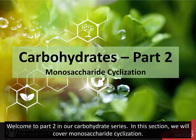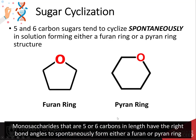Welcome to part two in our carbohydrate series. In this section we will cover monosaccharide cyclization. Monosaccharides that are five or six carbons in length have the right bond angles to spontaneously form either a furan or pyran ring structure.